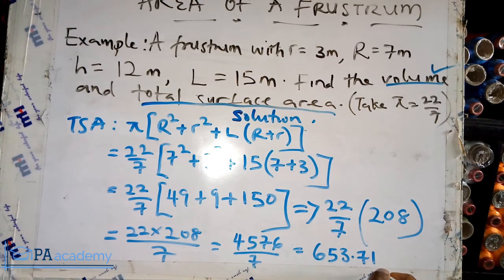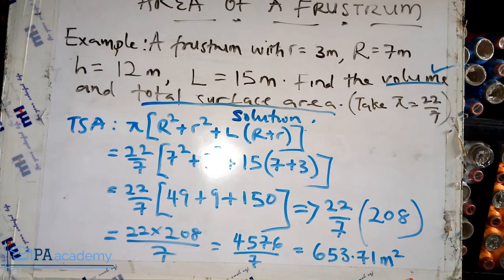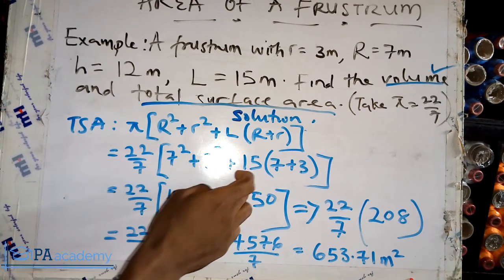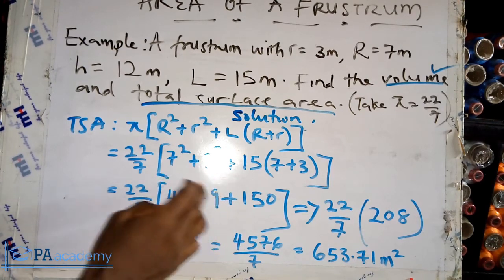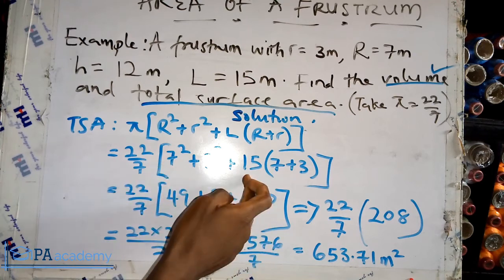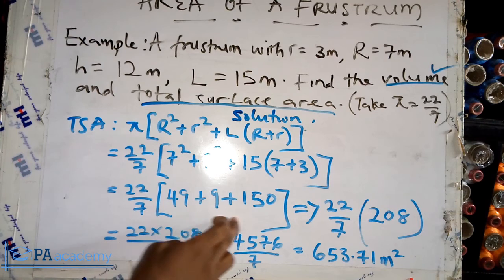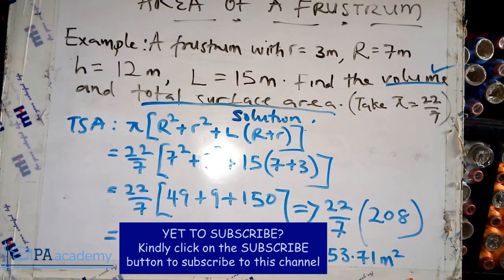Dividing 4,576 by 7 gives us 653.71 meters squared. So the total surface area is 653.71 square meters. This is how to apply the formula for the total surface area of a frustum. Just make sure you pay attention to the addition and multiplication of all the figures so you don't mix them up and get a wrong answer. With that we've come to the end of this video — please subscribe to PE Academy, give a thumbs up, share, and I'll see you in another video. Thank you.